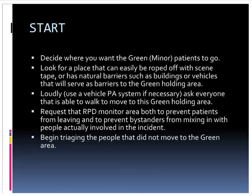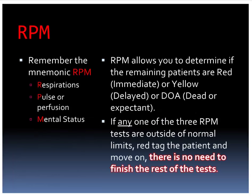Begin triaging all patients who didn't move. Here's a good indication: if a patient walks, they're green; if they don't walk, they're yellow or red. START triage uses the mnemonic RPM, standing for Respirations, Perfusion, and Mental Status. RPM allows you to rapidly determine if patients are red (immediate), yellow (delayed), DOA/expected, or gray. If any one of the three RPM tests is outside normal limits, tag the patient red and move along — there's no need to finish the remaining tests.